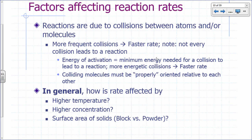What factors affect reaction rates? Reactions are due to collisions between atoms or molecules, so more frequent collisions generally mean faster rate. Not every collision will lead to a reaction — there's a minimum energy that colliding particles need for a reaction to occur. The more energetic the collisions, the faster the rate. That minimum energy is called the activation energy. Even with the right energy, there's often a certain orientation that atoms or molecules need to be in relative to each other for a reaction to occur.